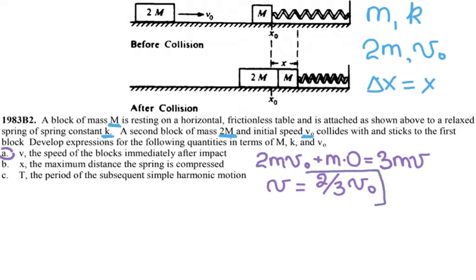For part b they ask you maximum compression, so they ask you to find X, the maximum compression. I can use energy before equals energy after. So energy of the two blocks, kinetic energy of both blocks, is going to turn into the potential energy of the spring.